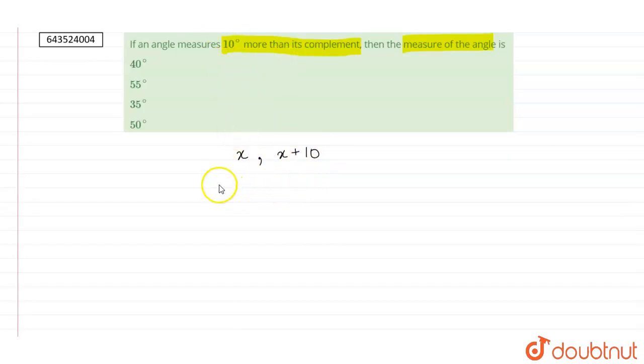Now, the sum of complementary angles is equal to 90 degrees. So x plus x plus 10 will be equal to 90 degrees. This will be equal to x plus x is 2x plus 10 equals to 90 degrees.